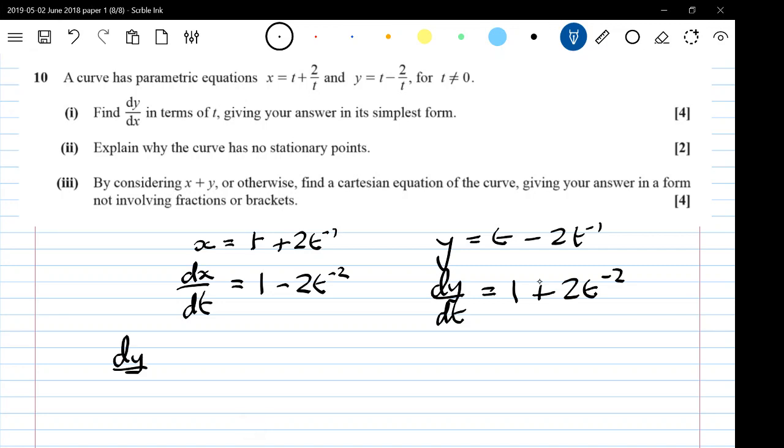Now, this is where a couple of people made a mistake. Dy by dx isn't what you get when you multiply those together. Because dy by dx is dy by dt divided by dx by dt. So we have to divide these two expressions. That is 1 plus 2t to the minus 2 over 1 minus 2t to the minus 2.